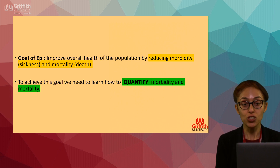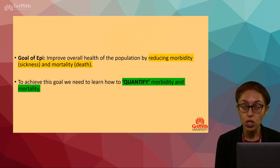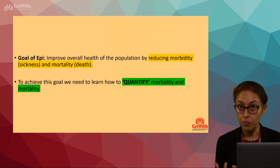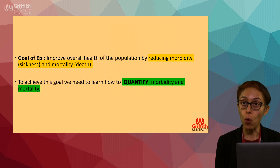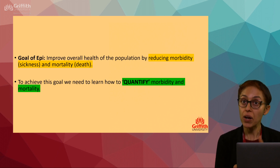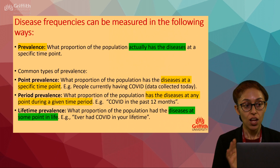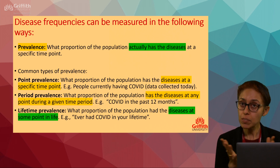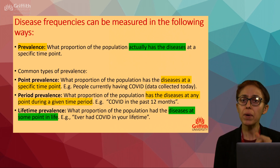To achieve the goal of understanding the overall health of the population, you need to know how to quantify morbidity and mortality. In today's lecture you're learning how to quantify morbidity through understanding prevalence and incidence. So first: prevalence.